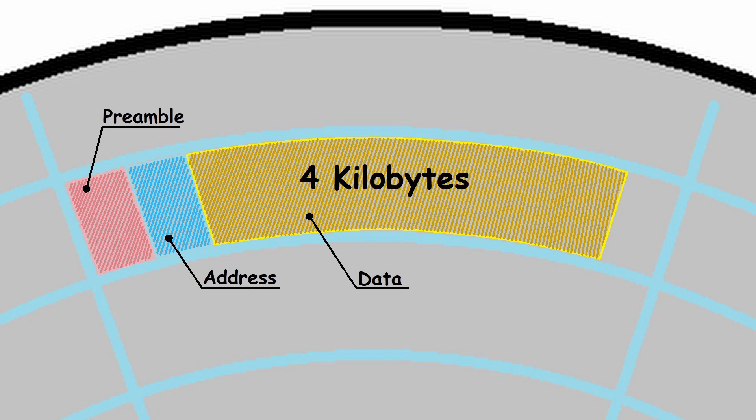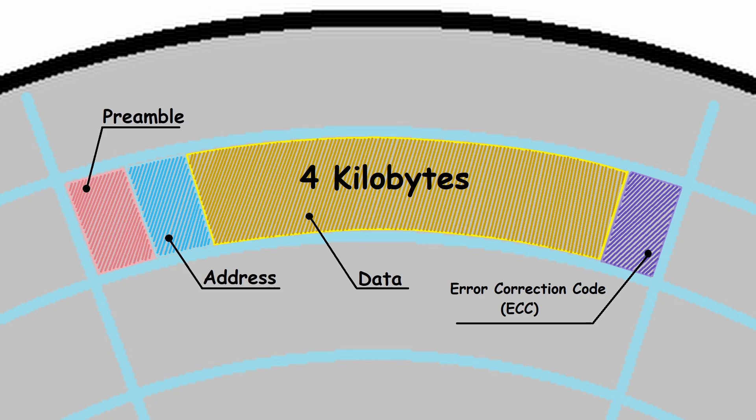There are a couple other regions beyond the data, the most notable being the error correction code, or ECC. It detects and corrects errors on the fly that may occur when the read write head is reading information from the disk's surface, ensuring that the data is accurately read.